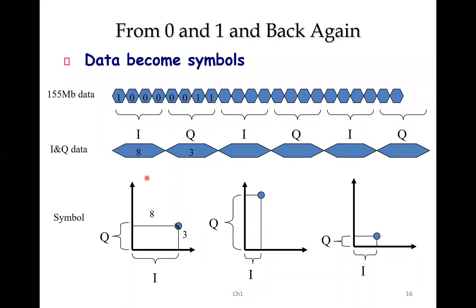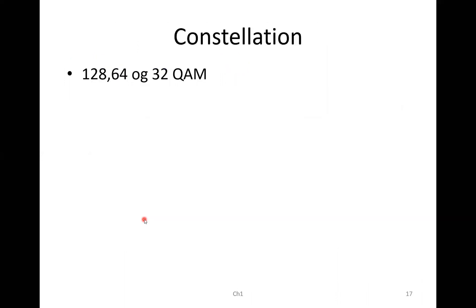So how do we get the data on the air and back again? Well, it's a fact that we cannot send binary digits in the air. So we have to transform the binary digits that we have here, which is 155 megabits data. In this case, we have to make it into some kind of sinusoidal waves. And the way we do it is we create what we call an I and a Q channel. And you see here, this is eight and this is three. And we make this channel here with eight in this direction and three up here. And this will be a point in a two-dimensional space.